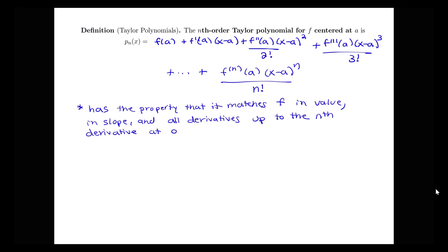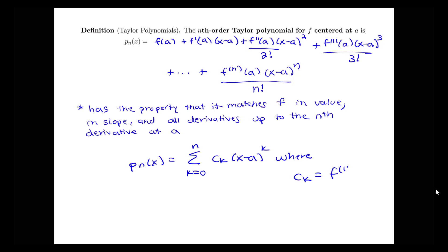This polynomial matches the function f in value, in slope, and in all derivatives up to the nth derivative at a. That matching of all that information is what makes it a really good approximation. We can write this as p_n(x) equals the sum from k equals 0 to n of c_k times (x minus a) to the k, where c_k equals the kth derivative at a over k factorial. Continue looking at the videos to see examples of using this definition to find Taylor polynomials.